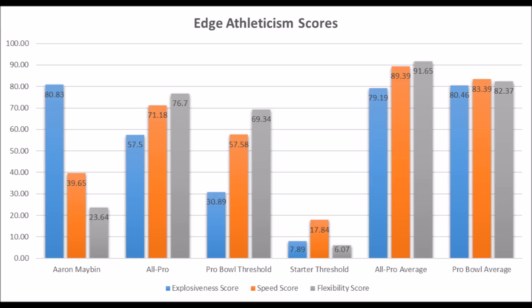In many ways, Aaron Maben definitely had other reasons why he busted, but you should never take a player top-11 overall who doesn't have all-pro and pro-bowl level athleticism traits. He had good production, but didn't quite have the athleticism traits necessary for all-pro or pro-bowl potential, and ultimately did not live up to expectations for those reasons and other factors that are harder to confirm from the data.